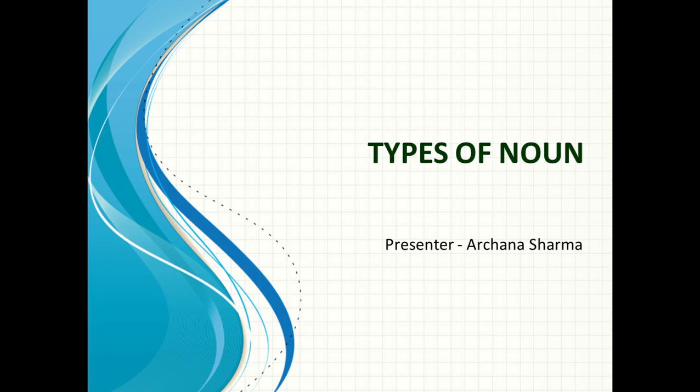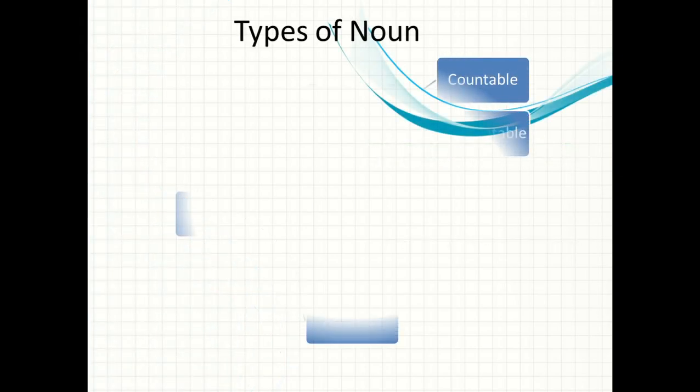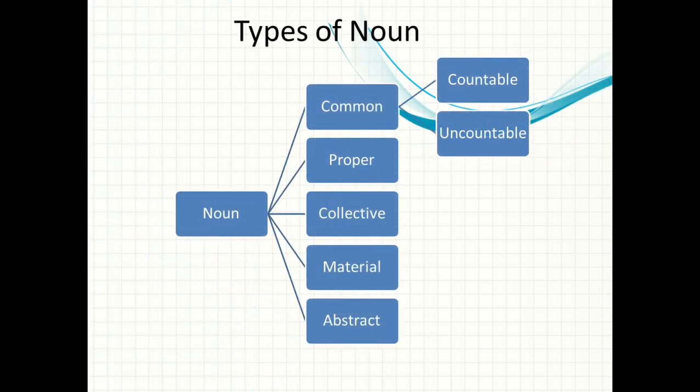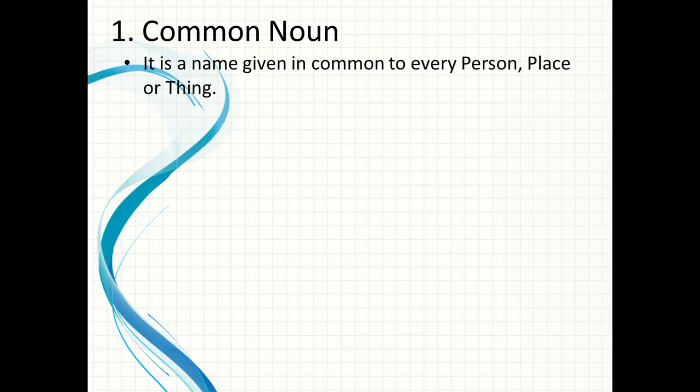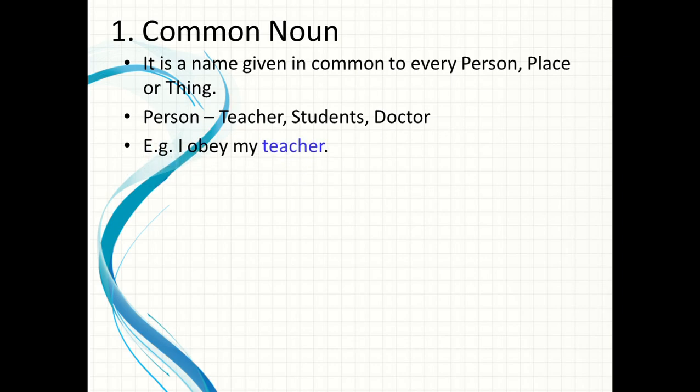Hello children, today we are going to discuss types of noun. Our first type of noun is common noun. What is a common noun? Here comes the definition: it is a name given in common to every person, place, or thing. For example, teacher, student, doctor.